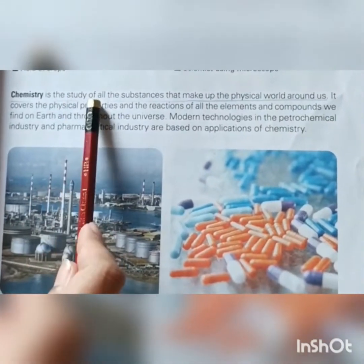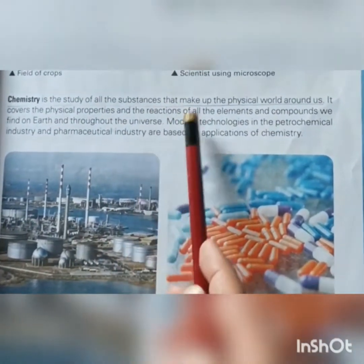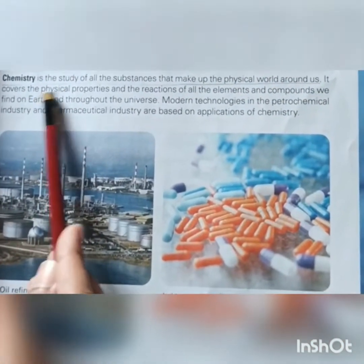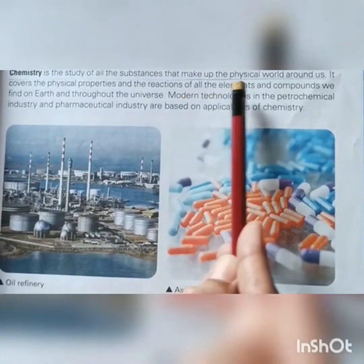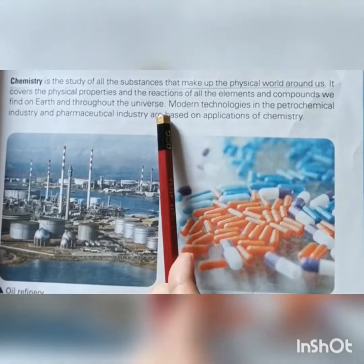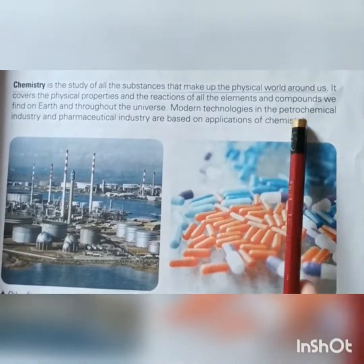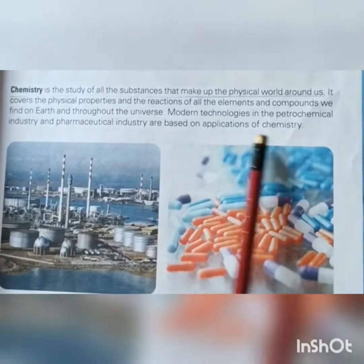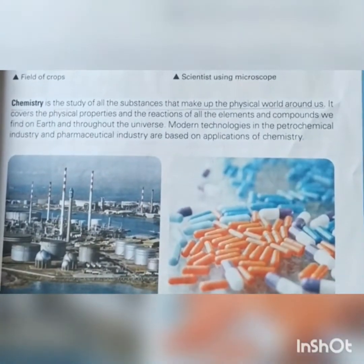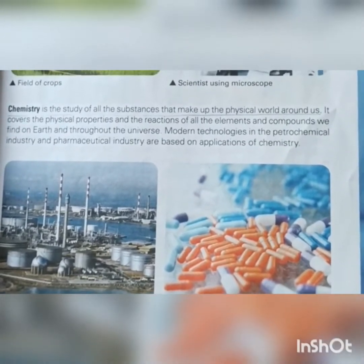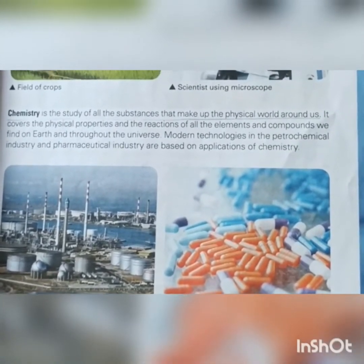Chemistry is the study of all the substances that make up the physical world around us. It covers the physical properties and the reactions of all the elements and compounds we find on the earth and the universe. Modern technologies in the petrochemical industries and pharmaceutical industries are based on the application of chemistry. Chemistry is the branch of science that deals with the properties, structures, reactions, and composition of substances.